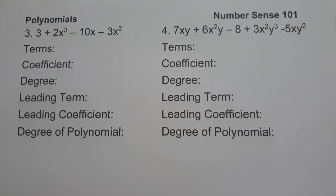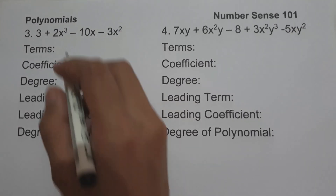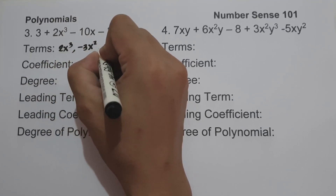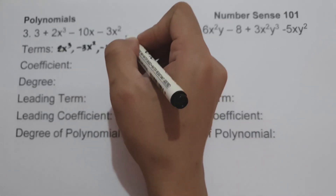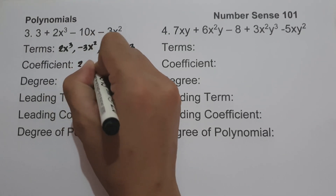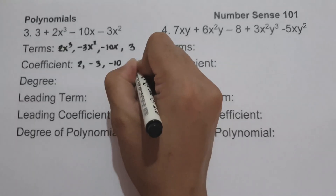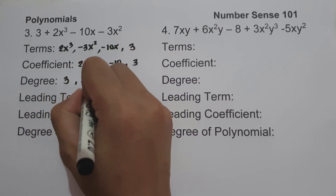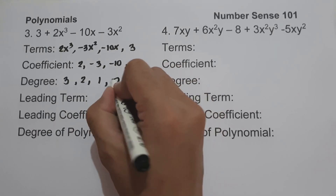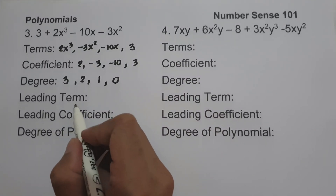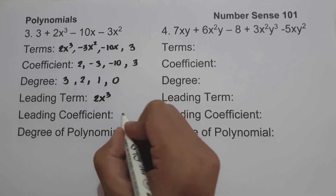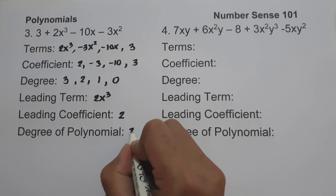Number 3: 3 plus 2x cubed minus 10x minus 3x squared. The different terms, arranged by degree, are 2x cubed, negative 3x squared, negative 10x, and 3. The coefficients are 2, negative 3, negative 10, and 3. The degrees are 3, 2, 1, and 0. Since 2x cubed has the highest exponent, the leading term is 2x cubed, the leading coefficient is 2, and the degree of the polynomial is 3.